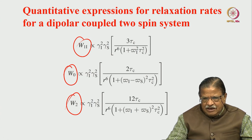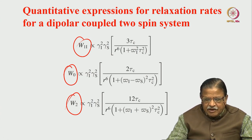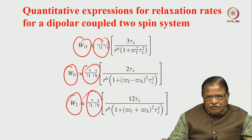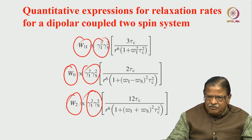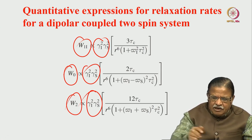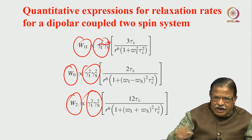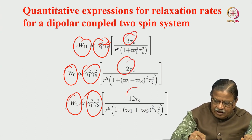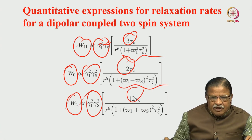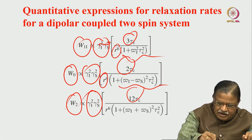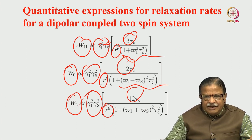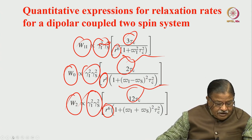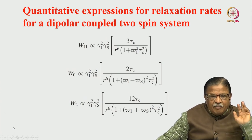One more important thing in these three equations: we have taken into account gamma, which also accounts for the population distribution. In the homonuclear situation, both gammas are equal. Otherwise, for heteronuclear cases, we have γ_i and γ_s. There is τ_c at the top, and all three transition probabilities W₀, W₁, and W₂ are inversely proportional to r^6 — r_ij to the power of 6 is in the denominator.